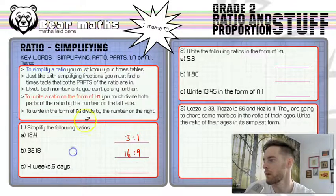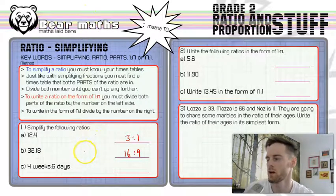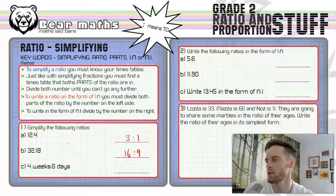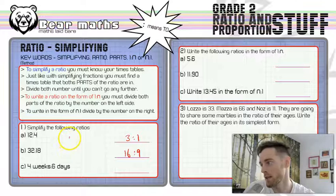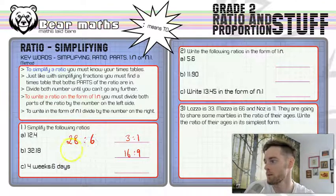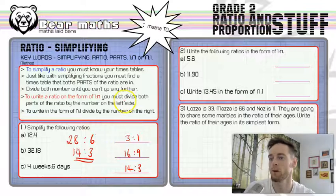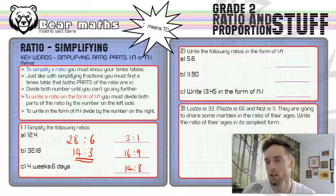This last one is trickier because we need to do a unit conversion: 4 weeks to 6 days. These are different units — weeks and days — so let's convert the weeks into days. There are 7 days in one week, so 4 weeks is 28 days. Now we have 28 to 6, and we don't need to worry about units. Dividing both by 2 gives us 14 and 3, and we can't simplify any further. So 14 to 3 is the simplified ratio. Make sure your units are always the same before doing any calculations.